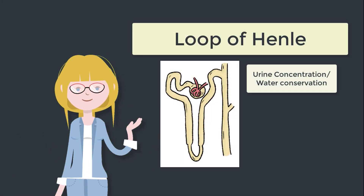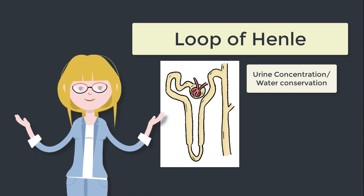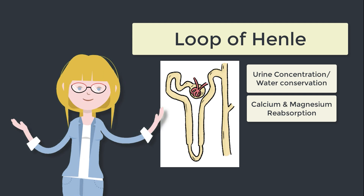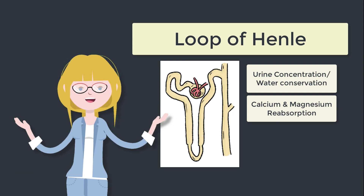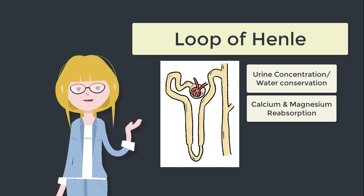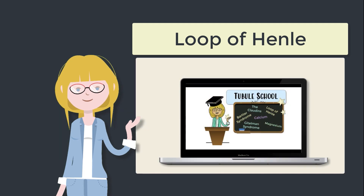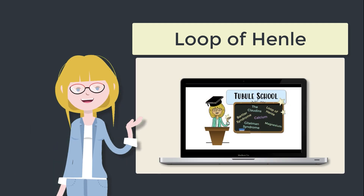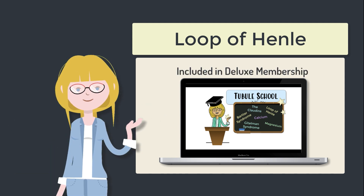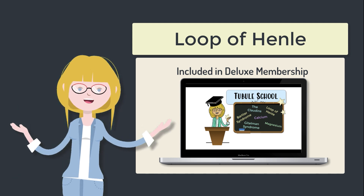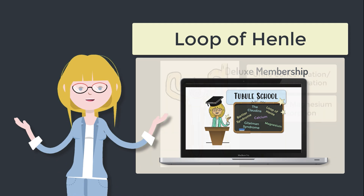Whilst water conservation is the main function of the Loop of Henle, it's not the only one. The Loop of Henle also helps in the reabsorption of specific electrolytes such as calcium and magnesium. For the purposes of this tutorial I'm not going to cover calcium and magnesium absorption in great detail, but if you're interested, check out Tubule School on our website — it covers calcium, magnesium, Bartter's, Gitelman's, all of that in a super fun way. It's like Netflix meets tubular physiology.